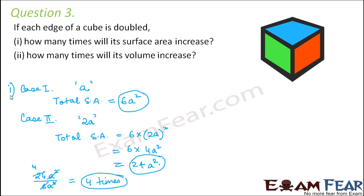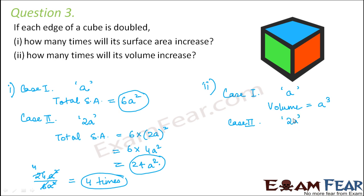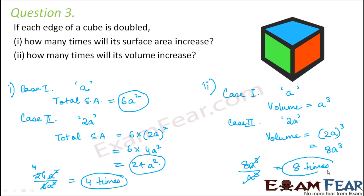That is the solution for the first part. The second part asks: how many times will its volume increase? In case 1, when each side is a, the volume is a³. In case 2, when each side is doubled to 2a, the volume is (2a)³ = 8a³. Comparing 8a³ with a³, the volume has become 8 times. So when the edge is doubled, the surface area becomes 4 times and the volume becomes 8 times.